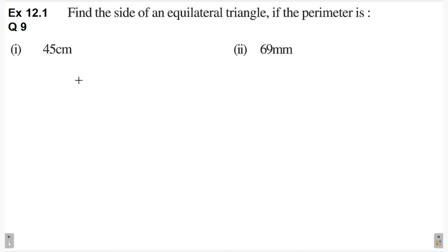A perimeter kya hota hai equilateral triangle ka? Equilateral triangle ki tino sides ki length equal hoti hai. Let's say length hai sides ki A. Perimeter kya ban jayega? A plus A plus A. Perimeter is equal to 3A. And A stands for side of triangle.